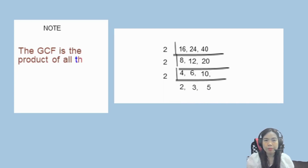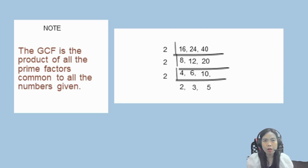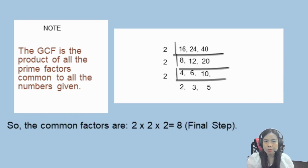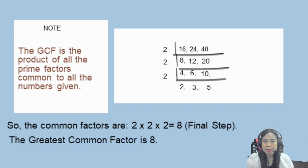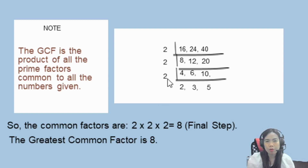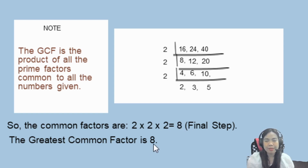Note: the greatest common factor is the product of all prime factors common to all the numbers given. So, the common factors are 2 times 2 times 2 is equals to 8. The greatest common factor is 8. Lahat ng numbers na nandito sa gilid, dito sa ating left, ito yung ating common factors. Kailangan lang natin kuhanin yung product nya — 2 times 2 times 2 — ang ating GCF ay 8.